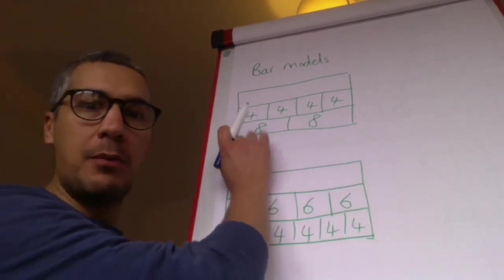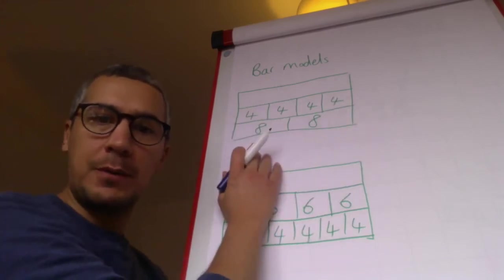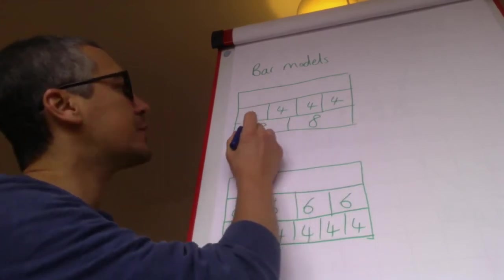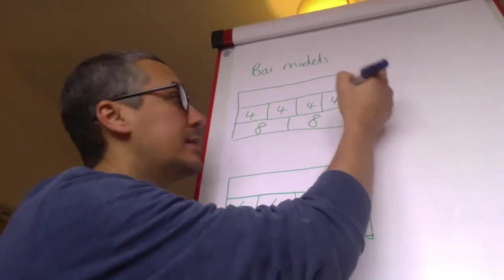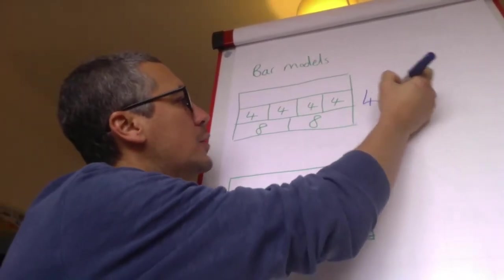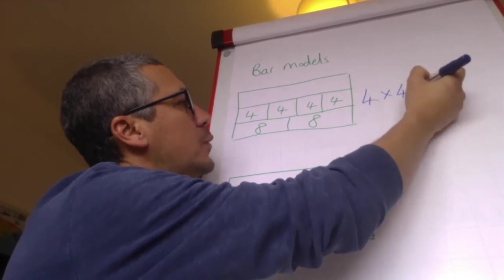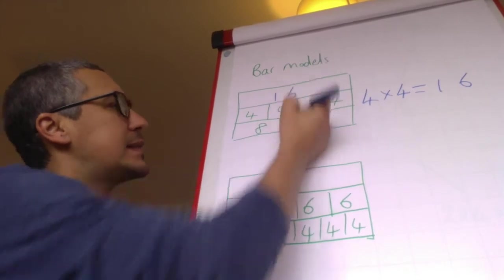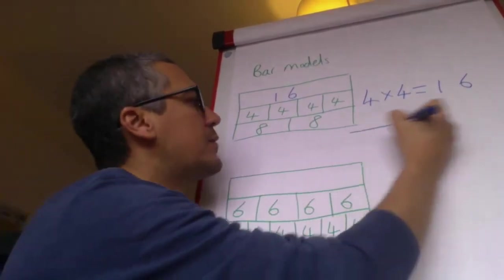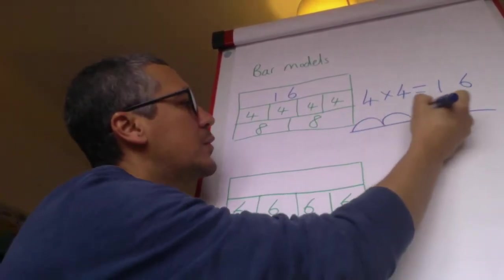We've got the bar model that shows that one, so we've got four lots of four: one, two, three, four. I've already made another mistake in this one, actually. Four times four equals sixteen, so we know that this is sixteen. Again, we can show that with the number line.